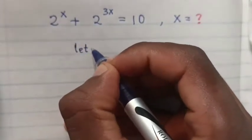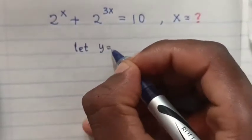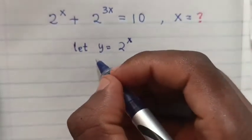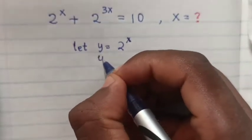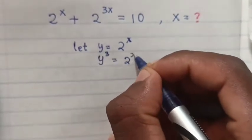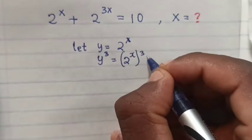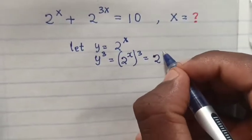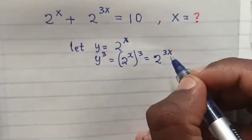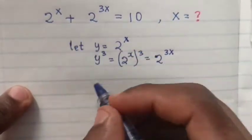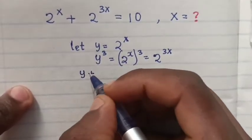First step, we let y equal 2^x. From the equation 2^x plus 2^(3x), and y^3 we let equal 2^x to the power of 3. So it will mean it is equal to 2^(3x). So y^3 equals 2^(3x).